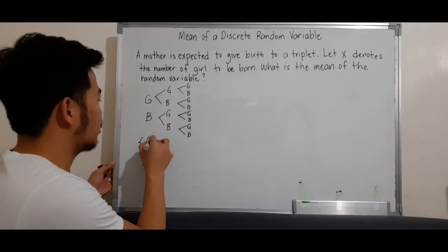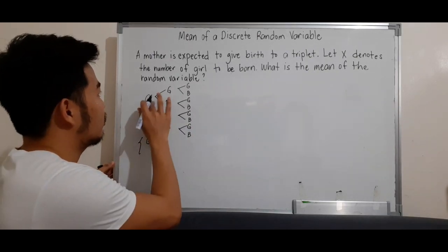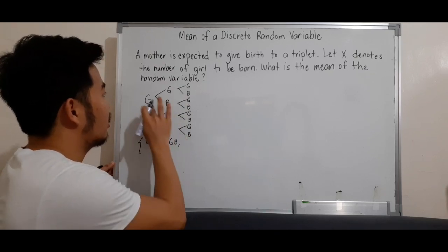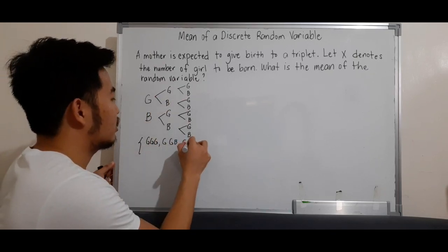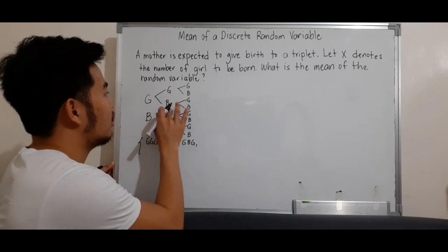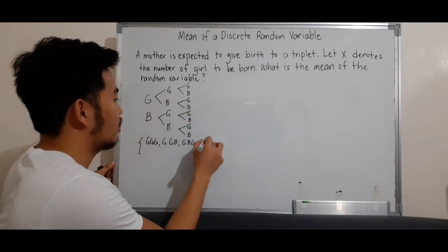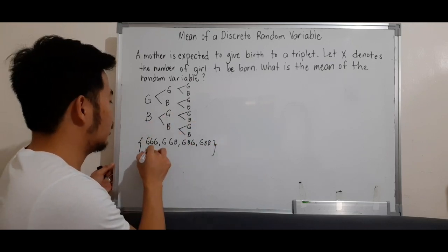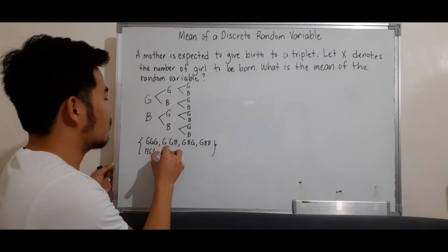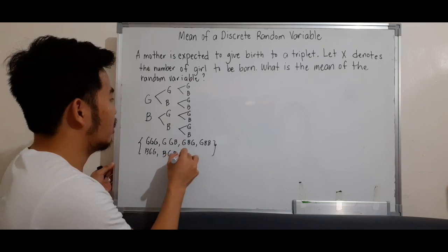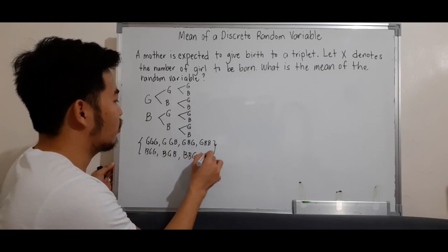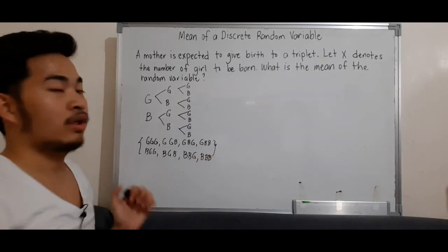So we have girl, girl, girl. Then girl, girl, boy. Girl, boy, girl. Girl, boy, boy. Boy, girl, girl. Boy, girl, boy. Boy, boy, girl. And boy, boy, boy.